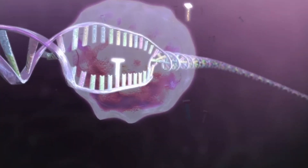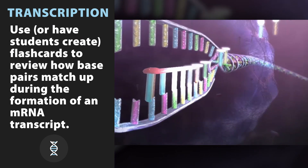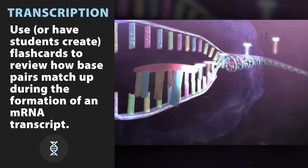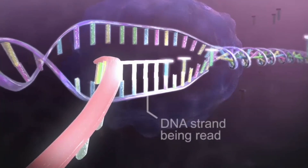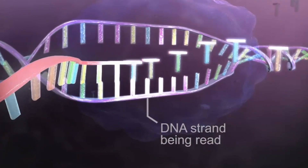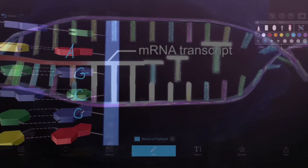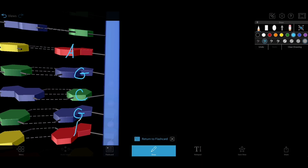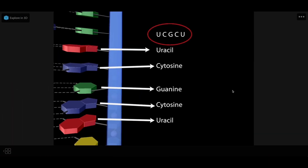Now let's focus on transcription. When students are learning about transcription, it's important for them to know what the different nitrogenous bases are, how they match up when an mRNA transcript makes a complement to a strand of DNA, and that uracil occurs in place of thymine in mRNA transcripts. Flashcards are a great way to help students review all this information and simulate what an mRNA transcript from a particular DNA strand might look like.